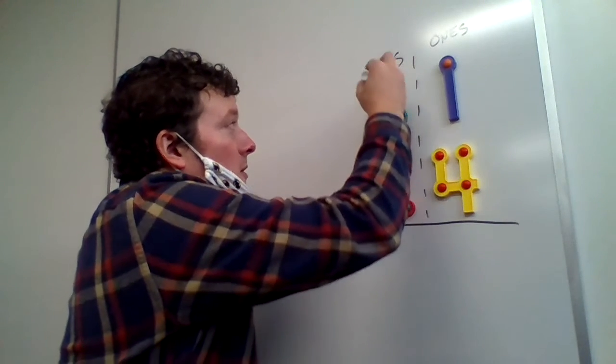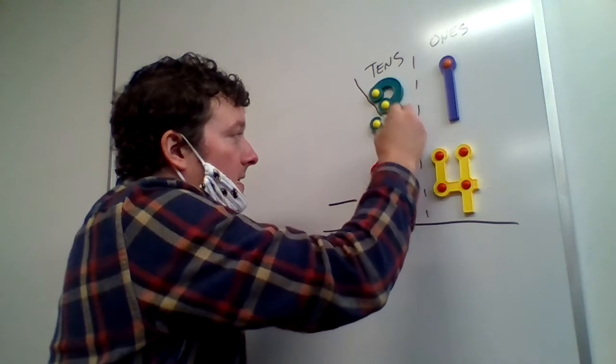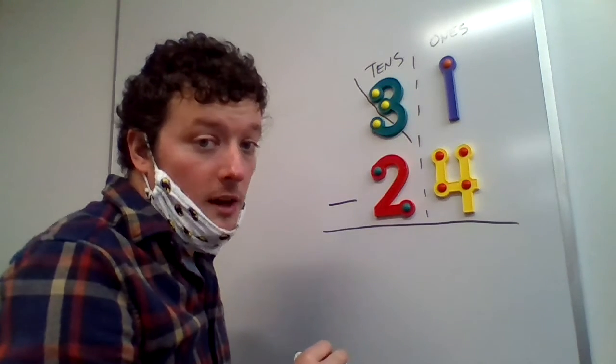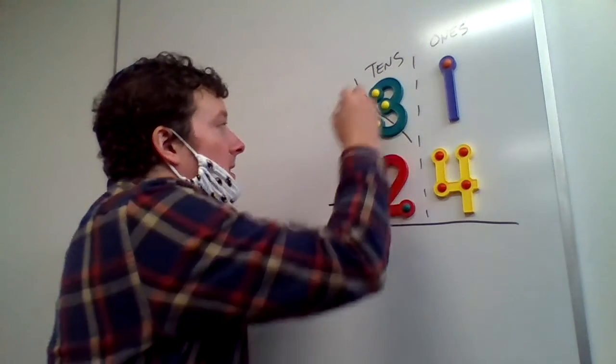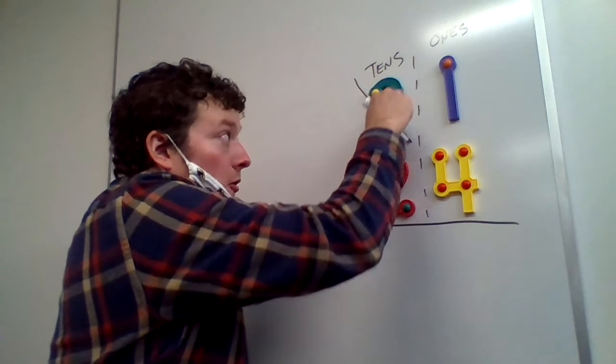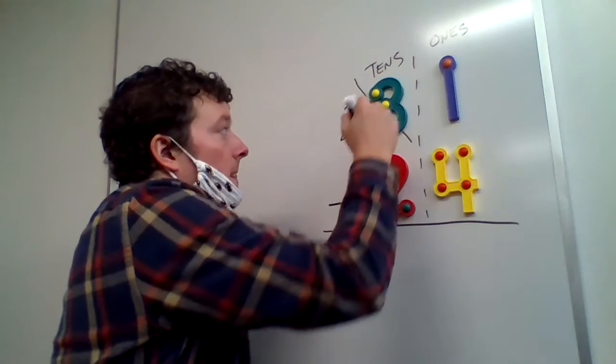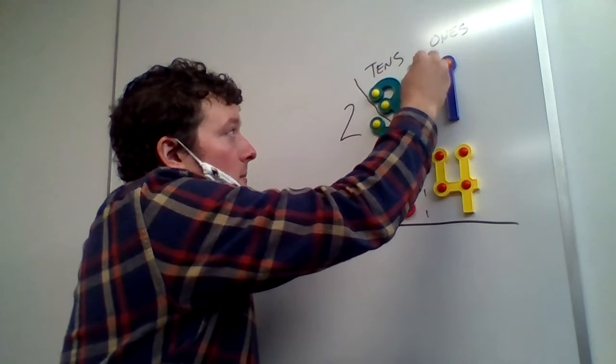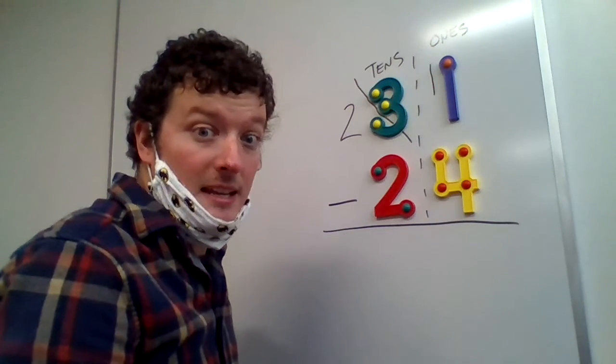We have to go next door and borrow 10 more. So this is what it looks like. So our three, we cross out our three because we're going to borrow one set of 10 from the three. So our three or a 30 goes down to a 20 and we borrow that 10 and put it here with our one to make it 11.